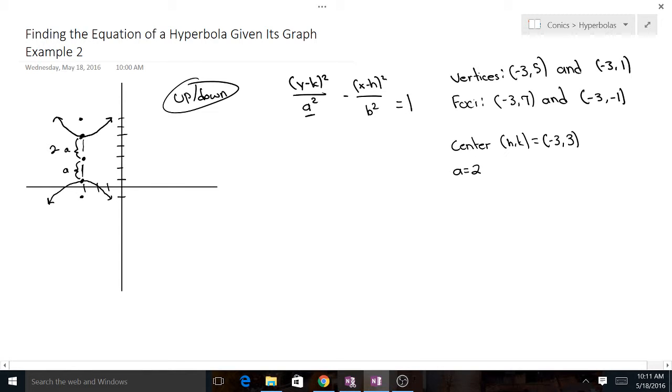And now we need to find b, which as you know is the hardest part to find, because we have to use this formula: c² = a² + b². And c is the distance from center to foci, to each foci. So let's figure out c.